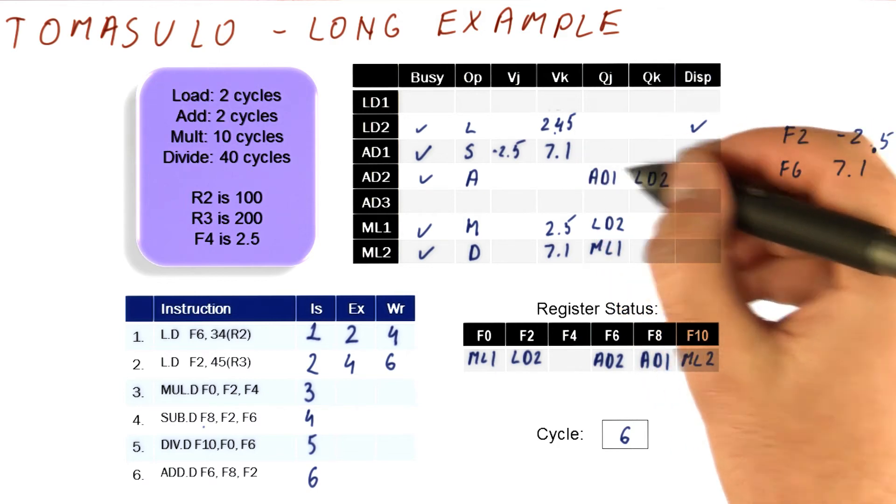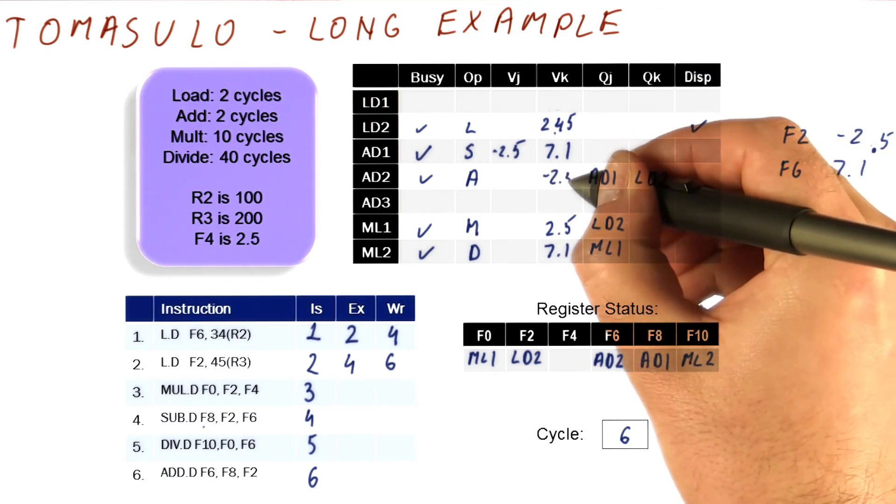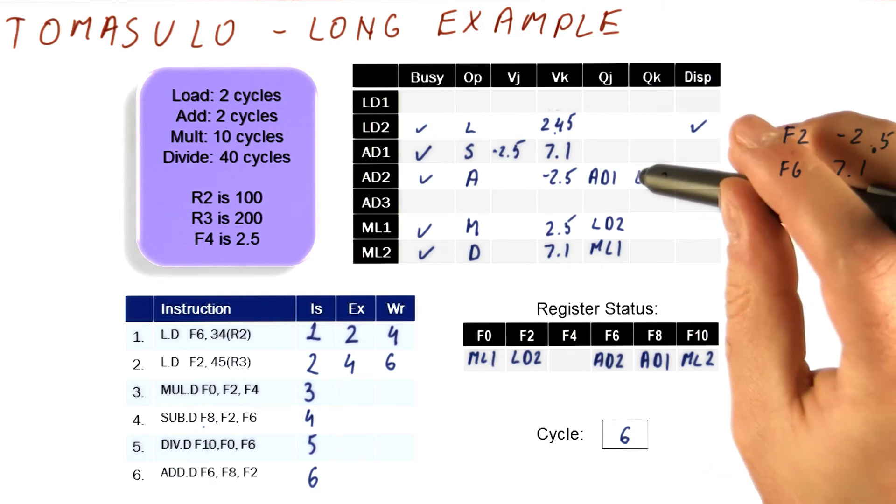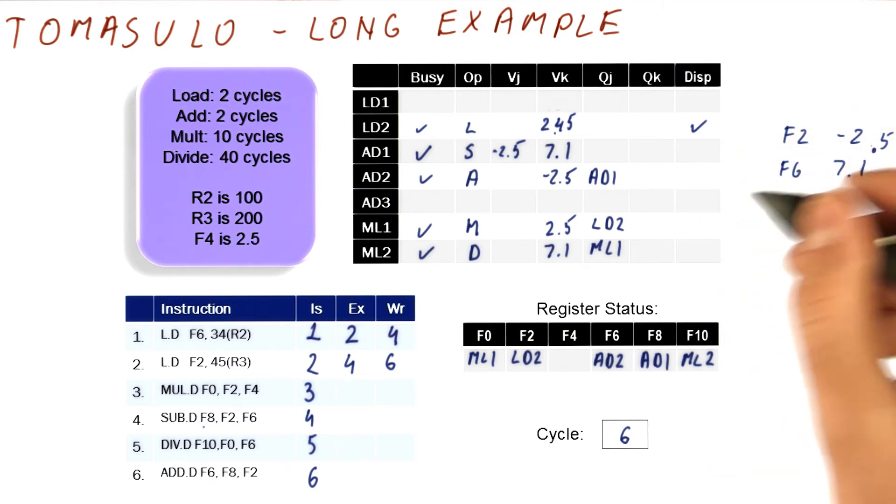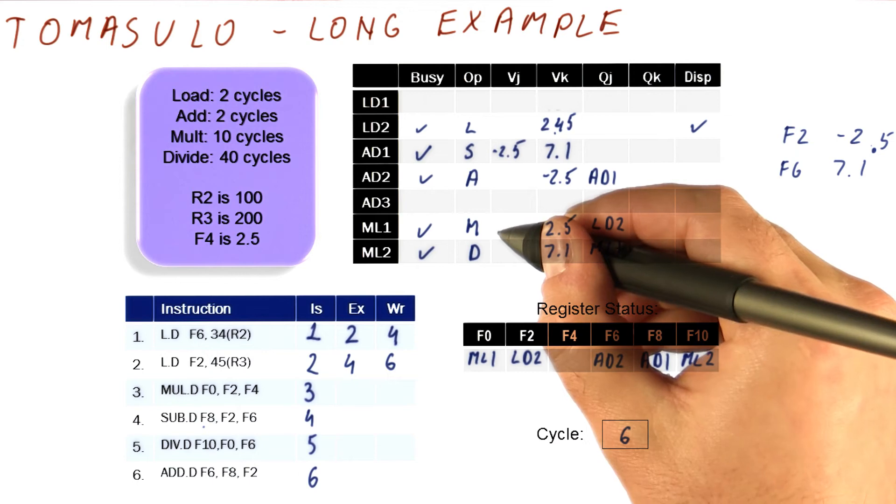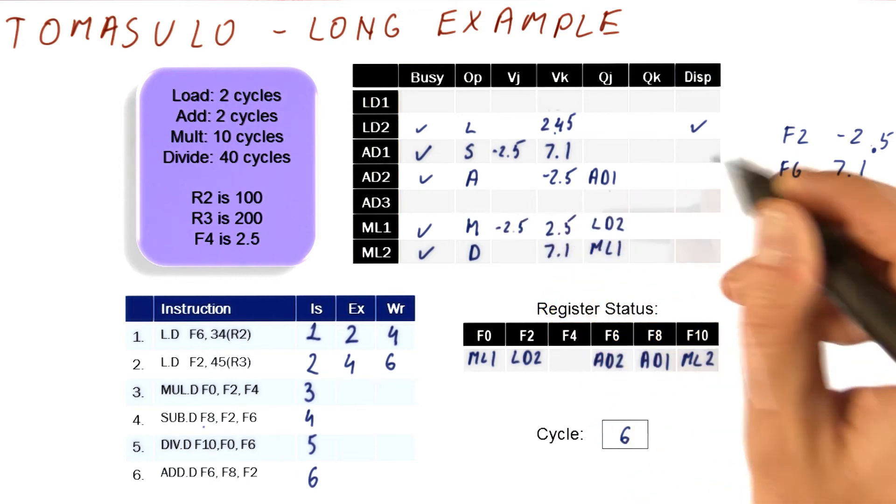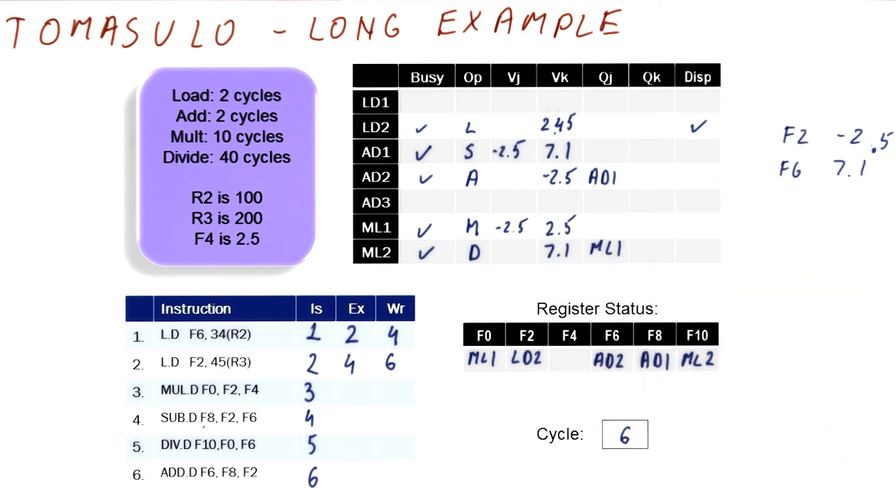The second operand of this instruction also matches, so we're going to capture it here and mark this as no longer waiting for it. And then the first operand of this matches it, minus 2.5. So we're going to unmark it here too.